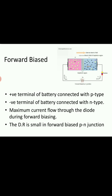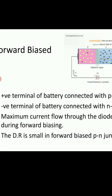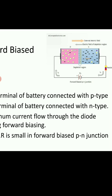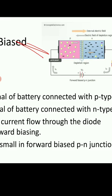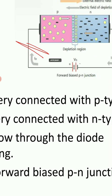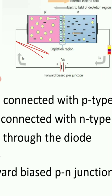When we are connecting the positive terminal to the P-type semiconductor and the negative terminal to the N-type semiconductor, when we have an unbiased diode, there is a P-type and N-type with a depletion region. You can see the depletion region here, and you will get an electric field due to that depletion region. That electric field we are calling the barrier potential.